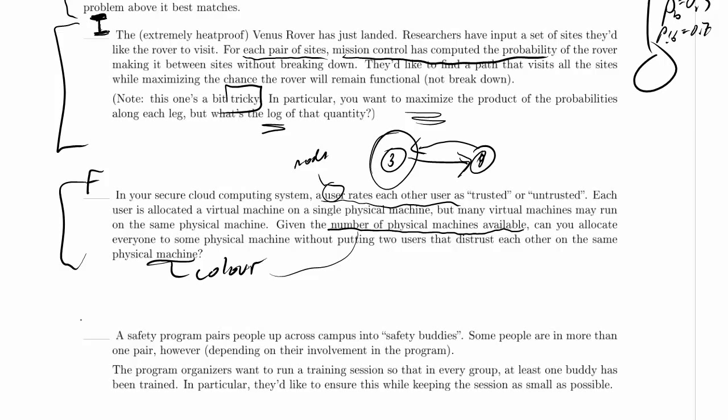We're working now on part three of problem two in the practice final exam. A safety program pairs people up across campus into safety buddies. Some people are in more than one pair, however, depending on their involvement in the program.